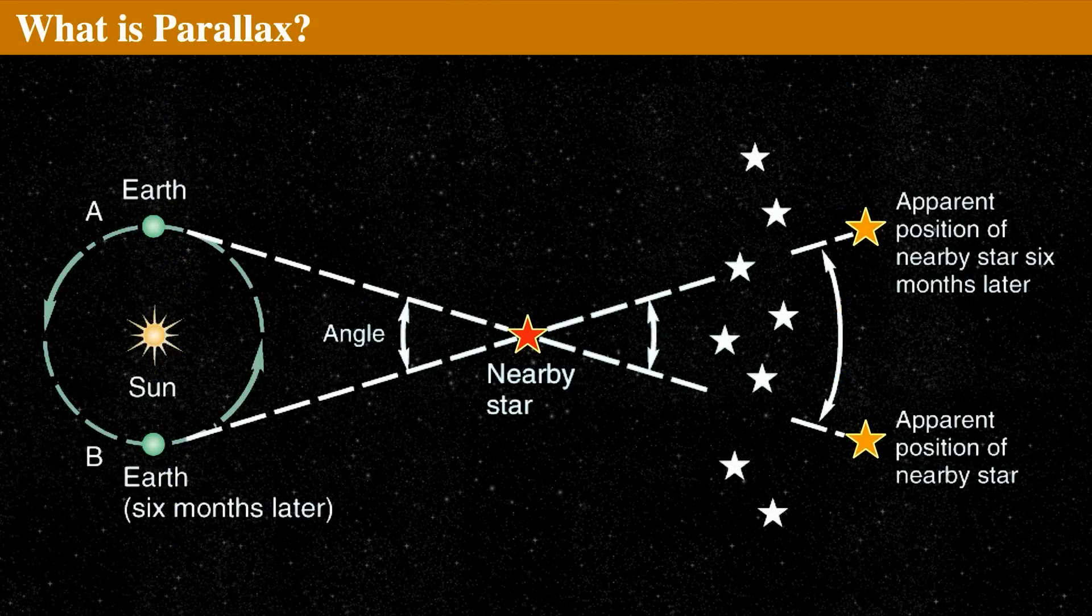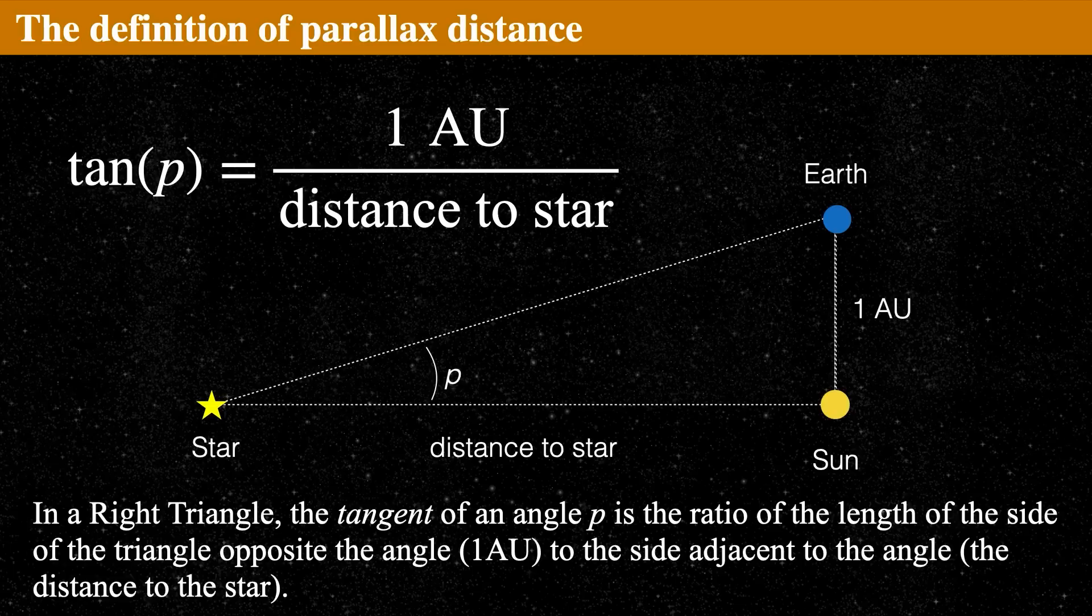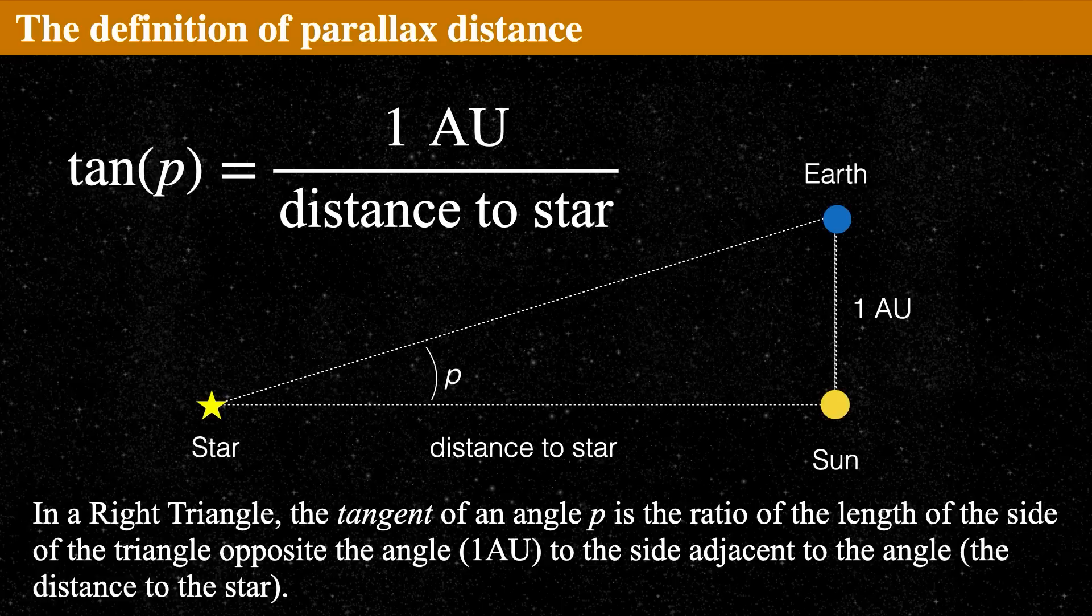This little angle we're going to call parallactic shift isn't the full angle, it's half the angle. We're going to make this angle with respect to the center of the solar system, which is the sun. Kind of weird, but that's how we're going to define parallax: half of the shift that we see from December to June.